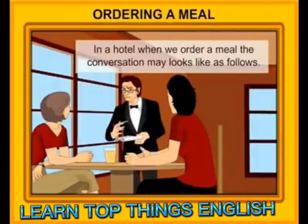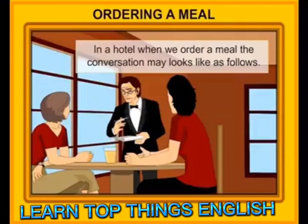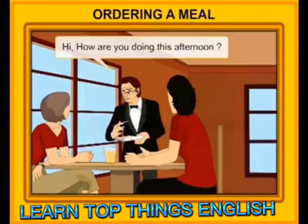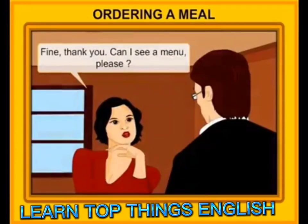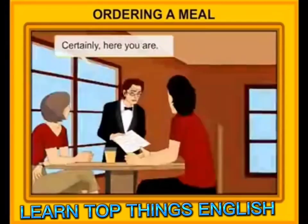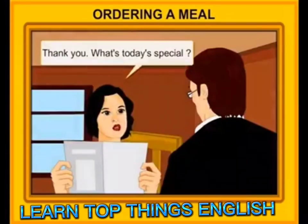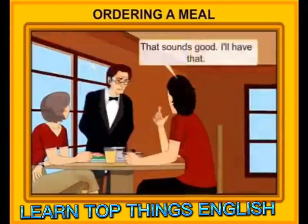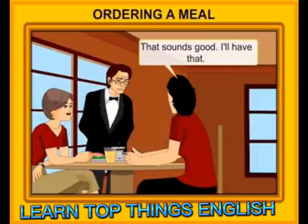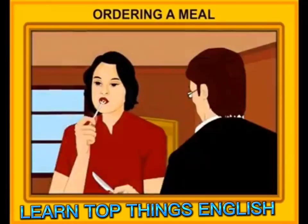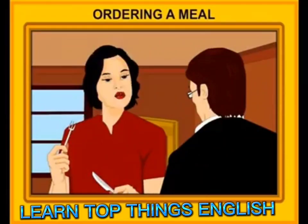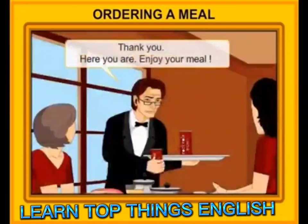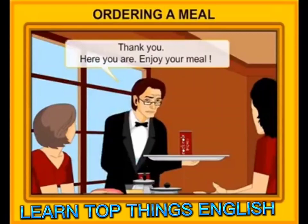Ordering a meal. In a hotel, when we order a meal, the conversation may look like the following. Hi, how are you doing this afternoon? Fine, thank you. Can I see a menu, please? Certainly, here you are. Thank you. What's today's special? Grilled chicken and cheese on rye. That sounds good. I'll have that. Would you like something to drink? Yes, I'd like lemonade. Thank you. Here you are. Enjoy your meal.